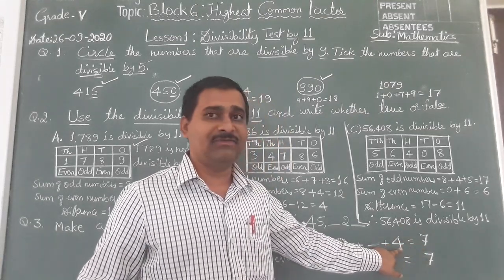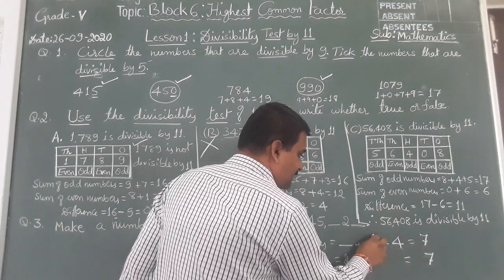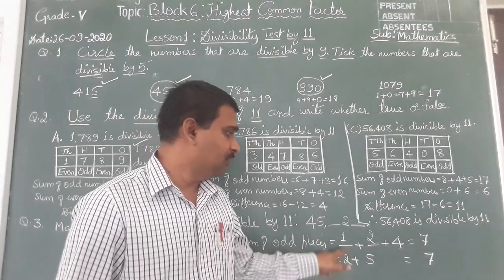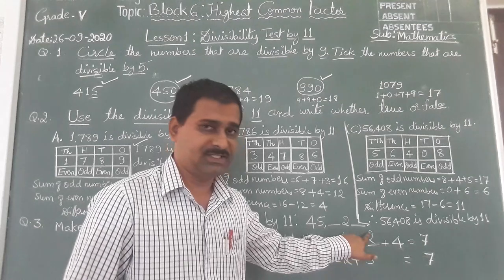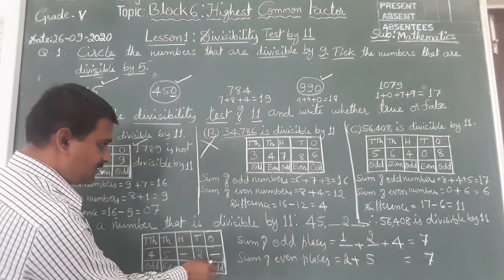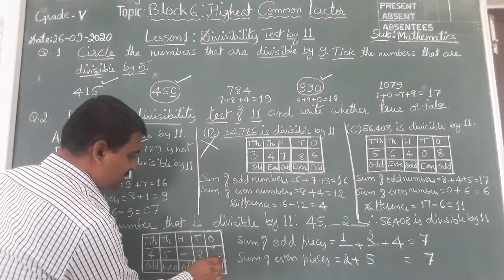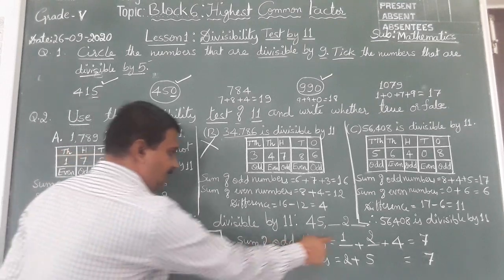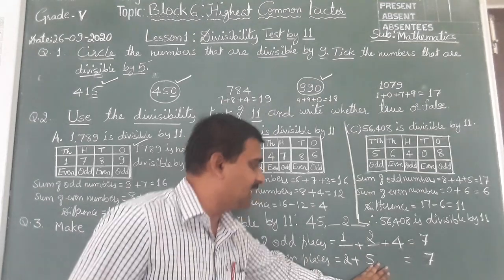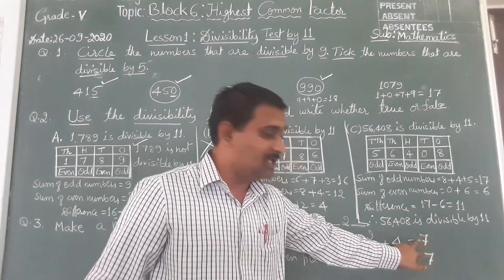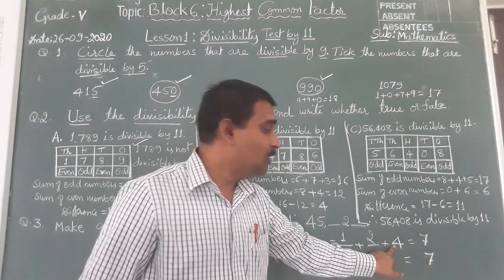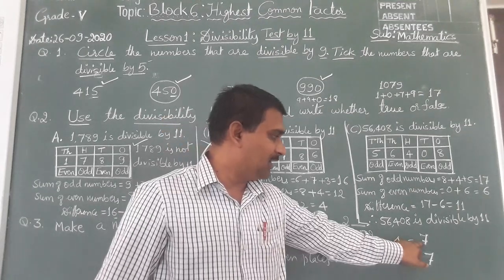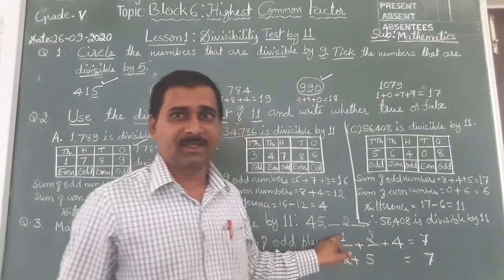If the sum of even places is 7, then the sum of odd places should also be 7 for the number to be divisible by 11. Both answers should be equal. Already 4 is in one odd place. To get a total of 7 in the two odd places: 4 plus 2 is 6, plus 1 is 7. So the missing digits are 1 and 2. 1 plus 2 is 3, plus 4 is 7.